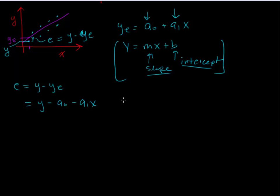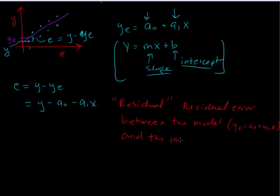This term here, these are called the residuals. Or it's the residual error. The residual error between the model, our ye is equal to a naught plus a one x. And the measured value. And that measured value here is just y. So this is the residual error. So this is the expression of error. And this is y minus ye.